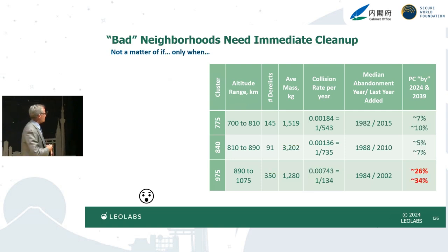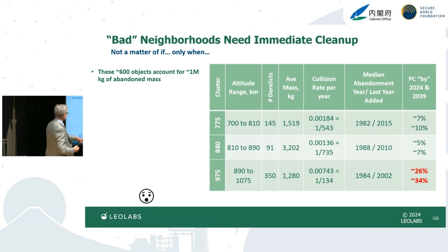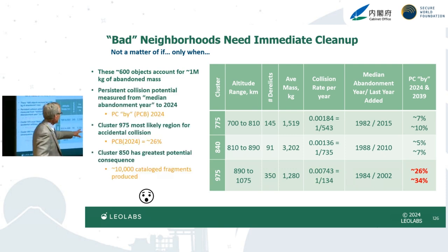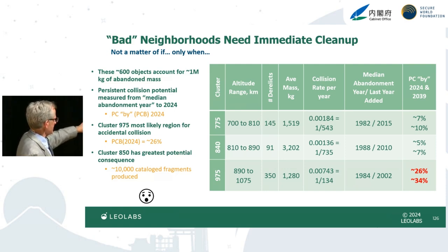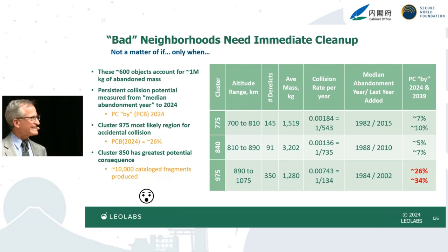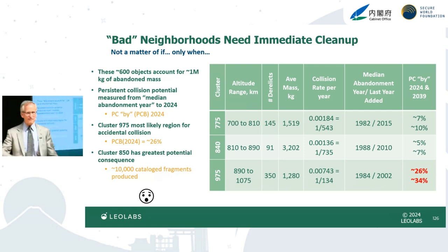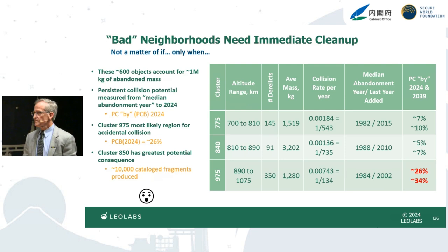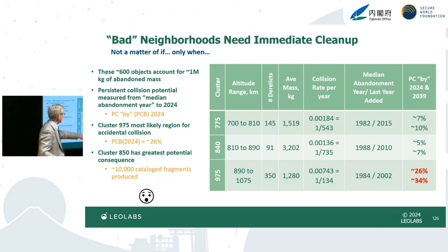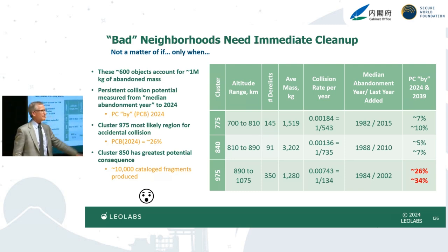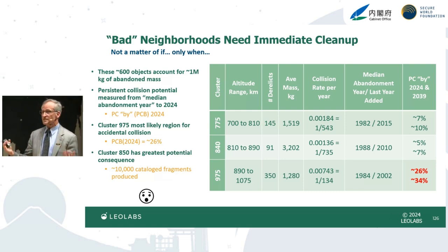The final answer: the persistent collision potential by 2024 at 975 km is 26%. Rolling the dice from 1984 to 2024, there's a 26% chance of a collision between those two massive objects. The debris created would be roughly comparable to the mass involved — around 2,500 kilograms — which would likely produce 3,000 to 4,000 trackable fragments. At the 840 km cluster, 6,000 kilograms involved in a typical collision would likely create 10,000 fragments. We've never had a breakup that created 10,000 fragments.